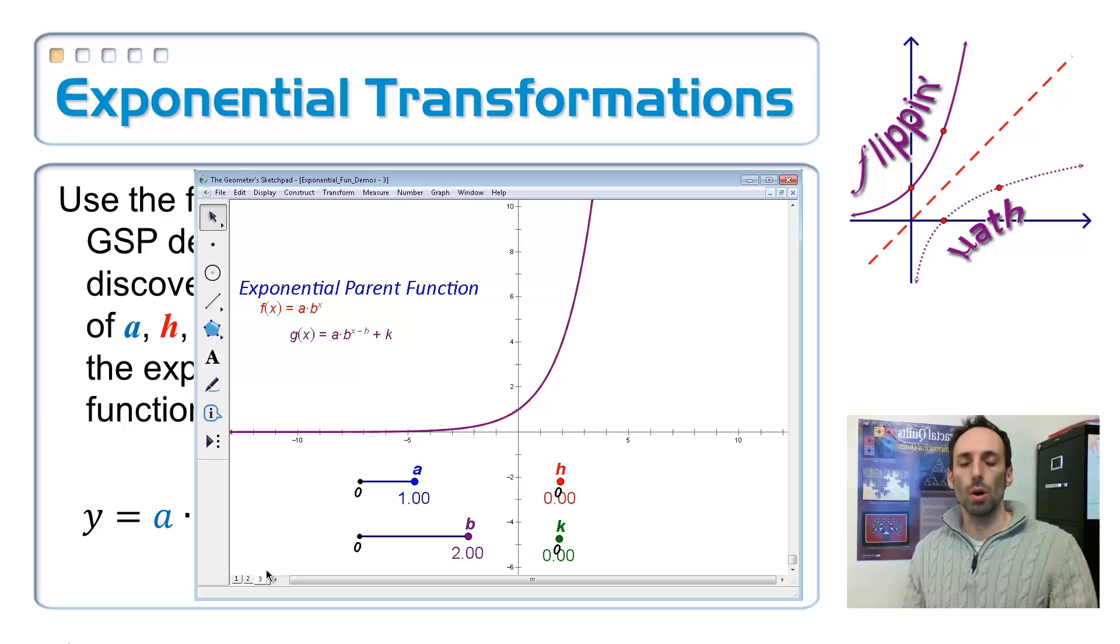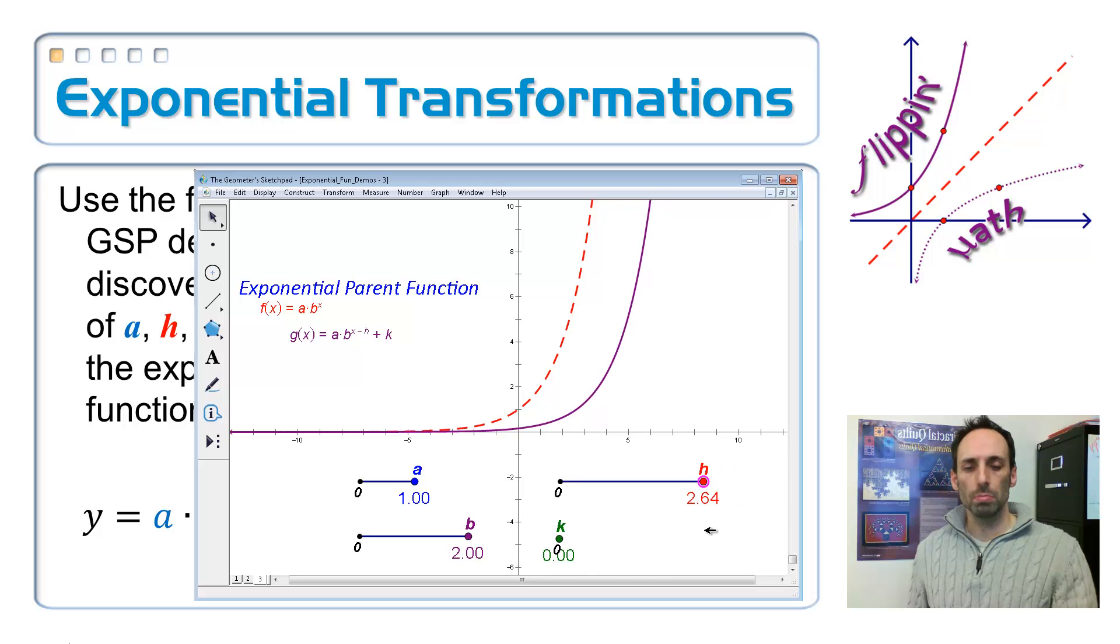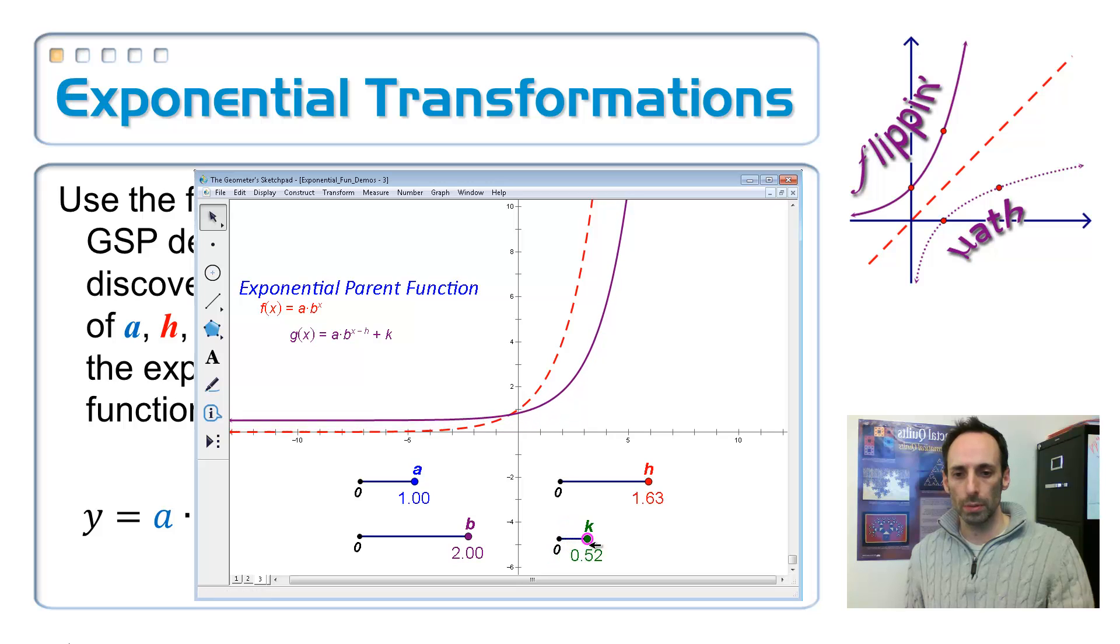Okay, so finally let's put them all together to look at the H and the K with the A value in there as well. So when I move the H, it almost looked like it was getting wider, but it's not. It's just moving it left and right. It's just moving the graph left and right. And since this is kind of grouped as an exponent, right beside the X is going to be a liar.